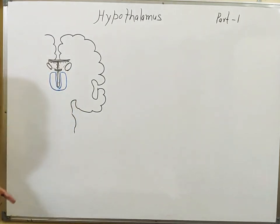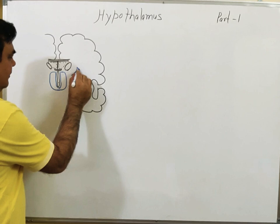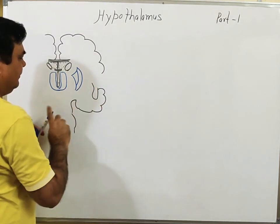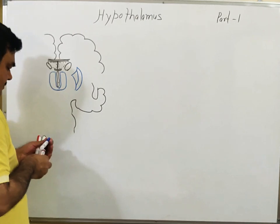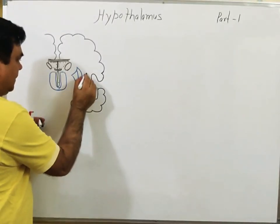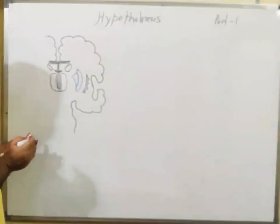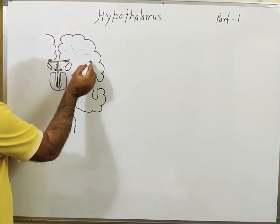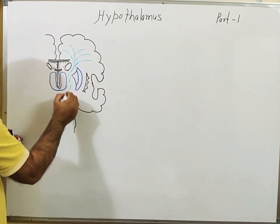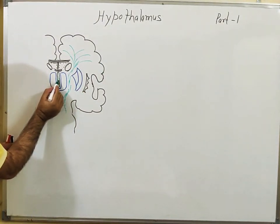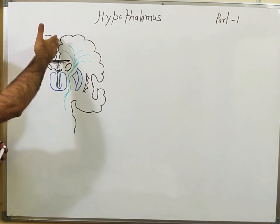This is the diencephalon — thalamus and hypothalamus. Here is the position of the lentiform nucleus, and this is the claustrum. This is the position of the internal capsule — the corona radiata — and this is the internal capsule. This is the third ventricle.